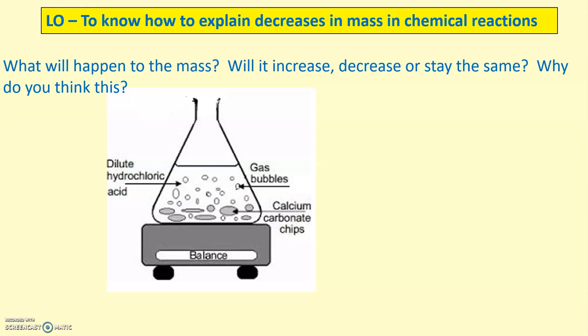Your 30 seconds is up there. The mass will decrease because there is nothing stopping the gas bubbles from escaping the conical flask. It will decrease even though the total, it will always be conserved. The mass on the balance to be measured will be decreased because gas is being produced that is allowed to escape from the conical flask.